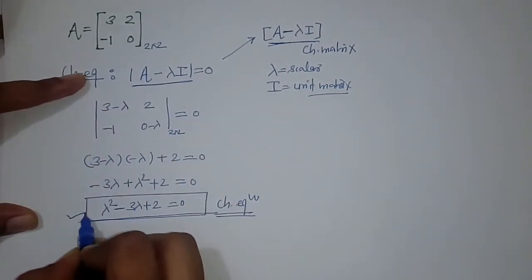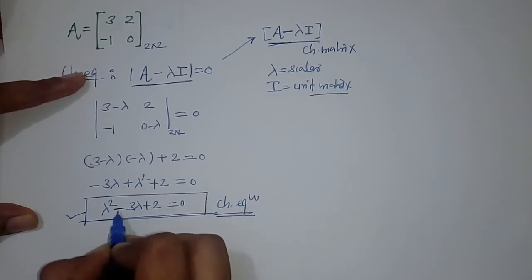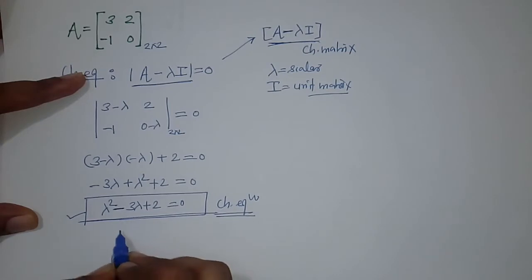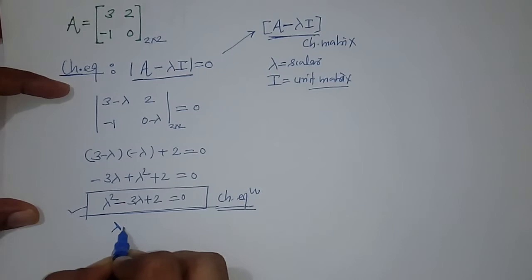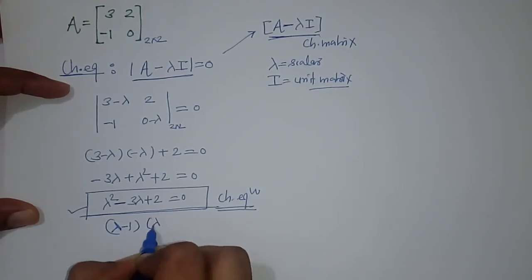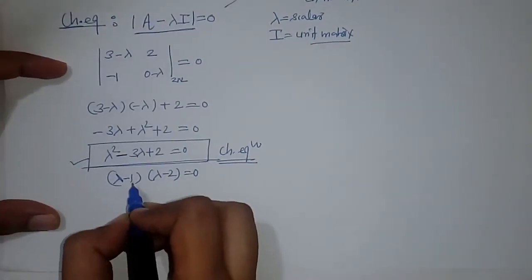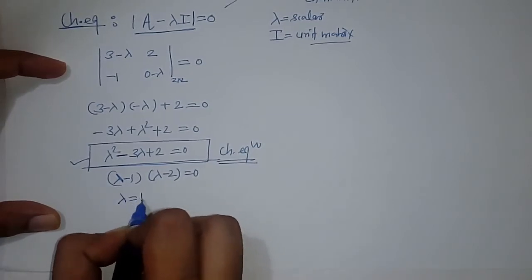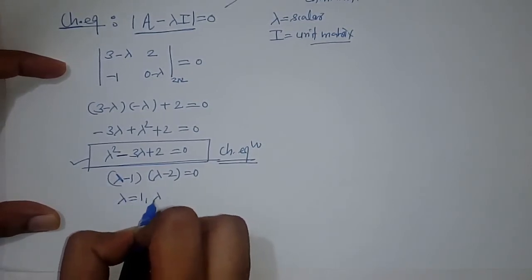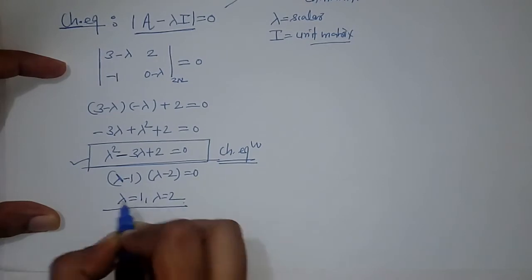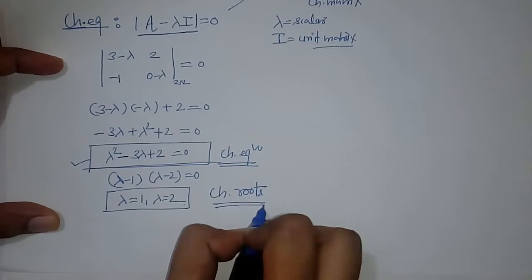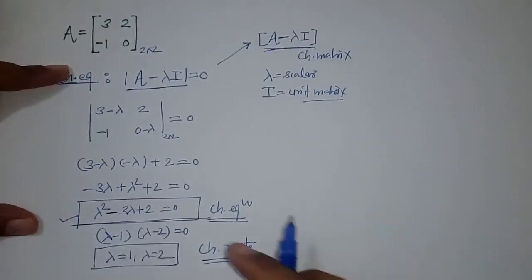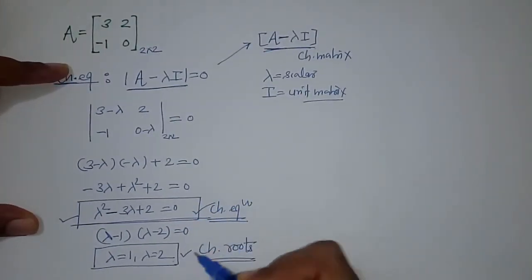Observe that this is a quadratic equation — an equation of degree 2. We can find its roots by factorization. On simplification, we get lambda equals 1 and lambda equals 2. These values of lambda are called characteristic roots.